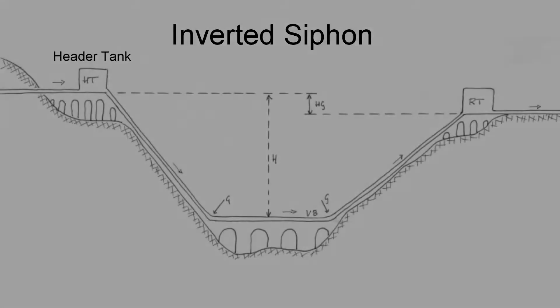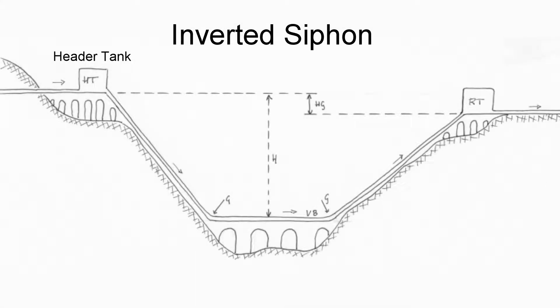As the water sits in the header tank, it represents potential energy due to the weight and height of the water in the tank, and from the elevation of the tank along the aqueduct path. This potential energy is converted to kinetic energy as it rushes down into the valley and crosses the valley.